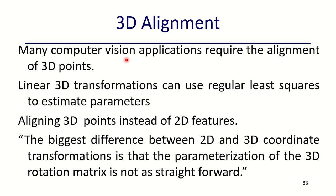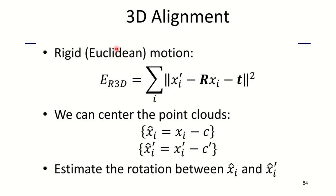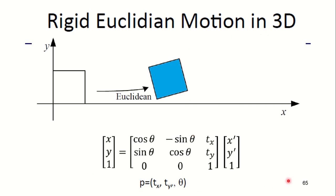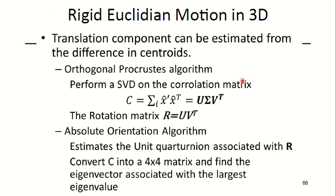Next is 3D alignment. Many computer vision applications require the alignment of 3D points. Linear 3D transformations can use regular least squares to estimate the parameters. Aligning 3D points instead of 2D features. The biggest difference between 2D and 3D coordinate transformations is that the parametrization of 3D rotation matrix is not as straightforward. Rigid Euclidean motion has been used for 3D alignment: E_R3D = Σ|xi' - Rxi - t|². We can center the point clouds at the centroid C. xi_hat = xi - C and xi'_hat = xi' - C'. We estimate the rotation between xi_hat and xi'_hat. In rigid Euclidean motion in 3D, this is the matrix which you use for the Euclidean transformation and the parameters included in it.